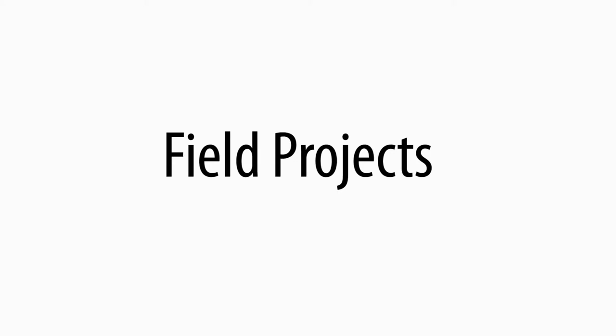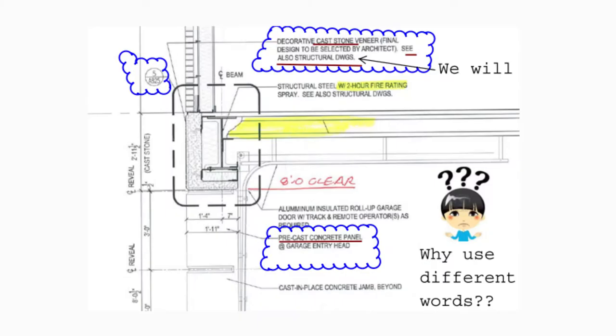We're going to look at tiny details — one word in one detail on a whole project — because they illuminate the bigger issues. Here in the first architectural section, there's an arrow that says it's a decorative cast stone veneer, and another arrow that says it's a precast concrete panel at the garage door head. This illustrates the problem of duplication and consistency. We're also told to see the structural drawings, which is good.